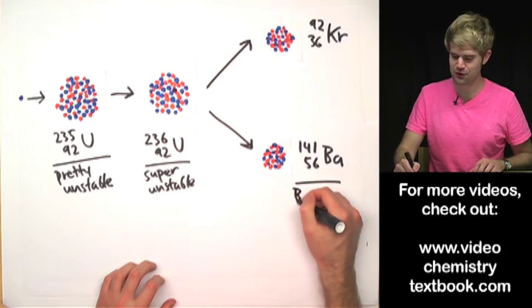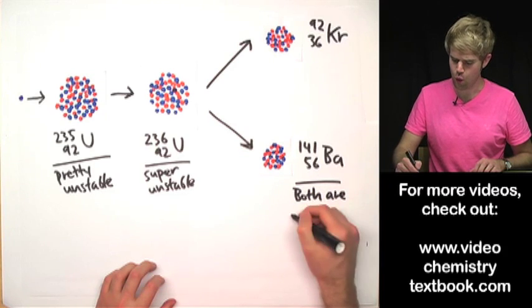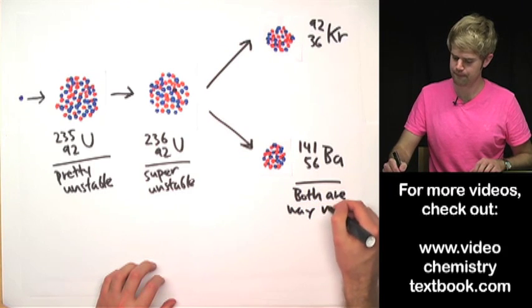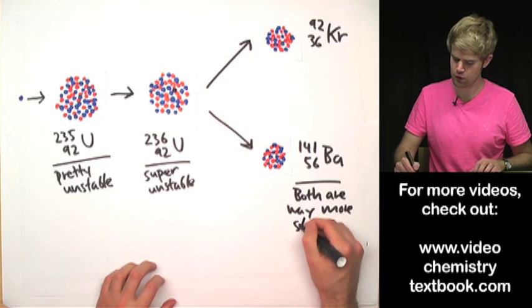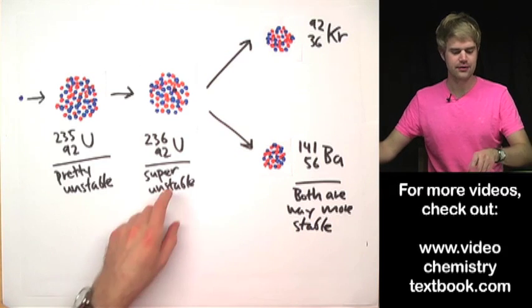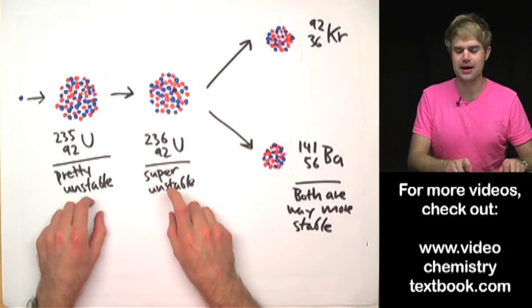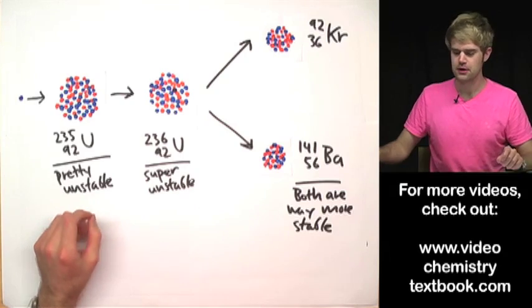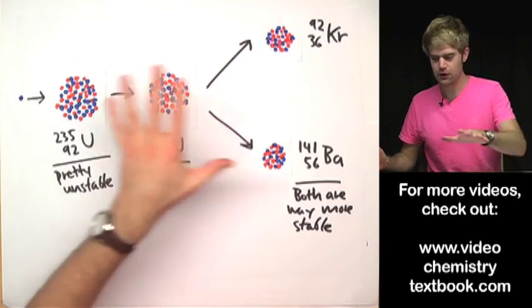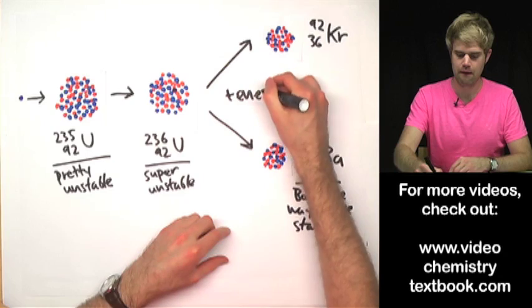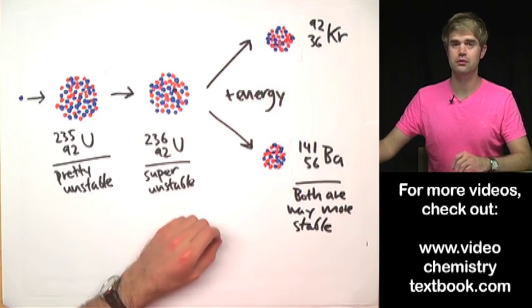Both Krypton and Barium are way more stable. They're both way more stable than either of these atoms that we started with. So we're going from unstable to stable, so energy can be released.